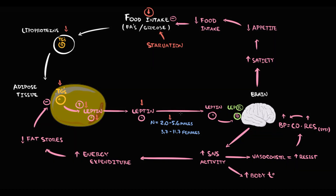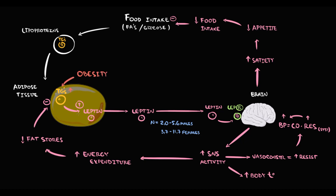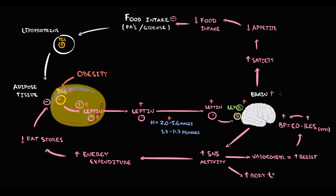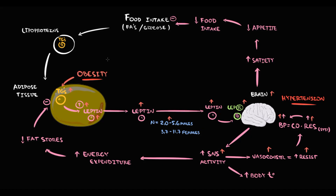Interestingly, leptin is closely associated with metabolic syndrome. Because in the case of obesity, there is a high amount of triacylglycerols in the adipose tissue, which causes massive production of leptin into the blood. So in obese patients, leptin level is high. With increasing amount of leptin in the blood, the stimulation of leptin receptors becomes more potent. As a result, the leptin effect on brain tissue increases. And because leptin causes increasing sympathetic nervous system activity, this provokes vasoconstriction, which in turn causes increasing blood pressure. This partially explains why people with metabolic syndrome have obesity combined with hypertension.